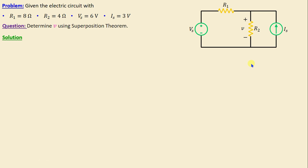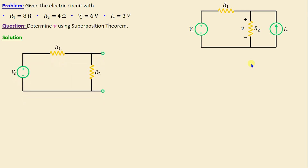Next, we proceed to deactivate all but one independent source in the circuit. This involves replacing the inactive voltage sources with short circuits, which means zero voltage, and the current sources with open circuits, which means zero current. We begin by activating the independent voltage source and deactivating the independent current source, which will be replaced by an open circuit.